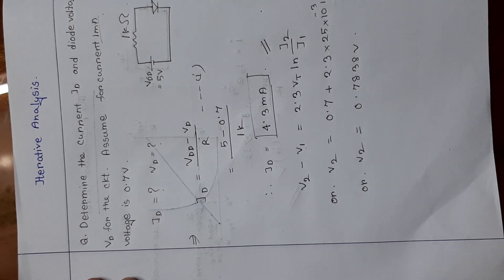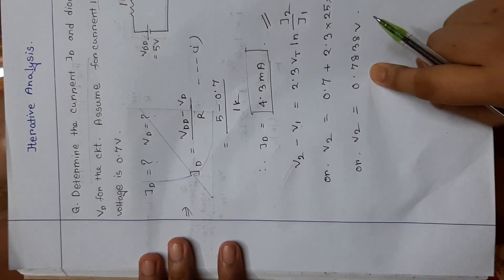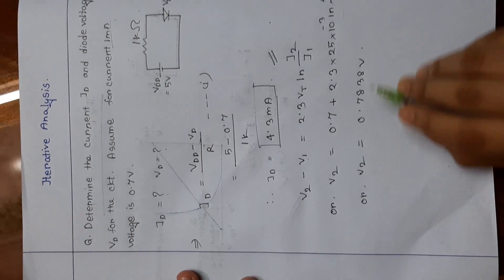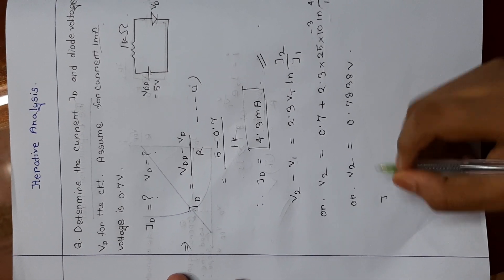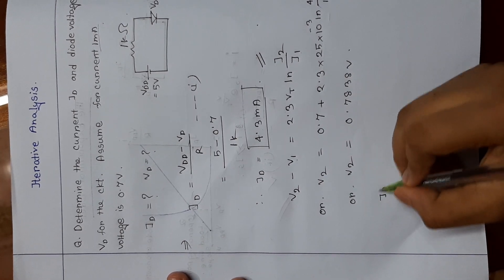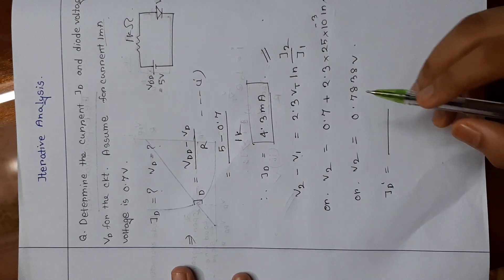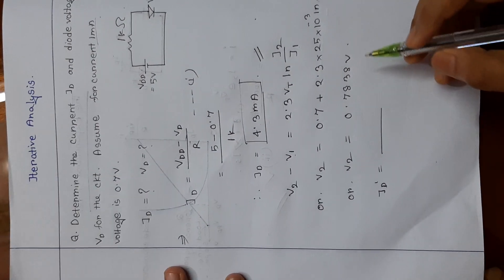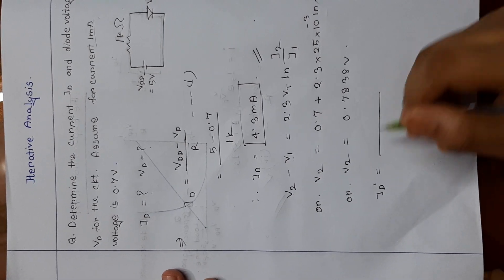So this is V2. And again, if we want to consider I2 by iteration analysis, we have to take several times, and we have to identify the V and I for several times.